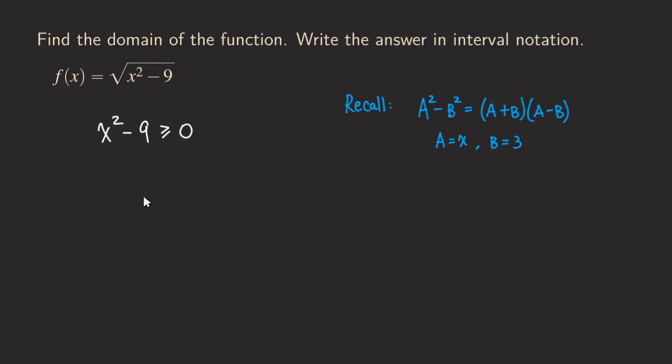So now we can factor. Factoring this, we are going to get a product of two binomials. a is x and b is 3, so a plus b is x plus 3. And the other factor would be x minus 3. So now we have this factored form.